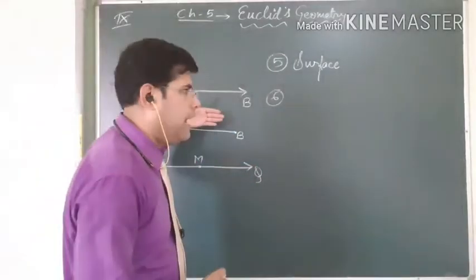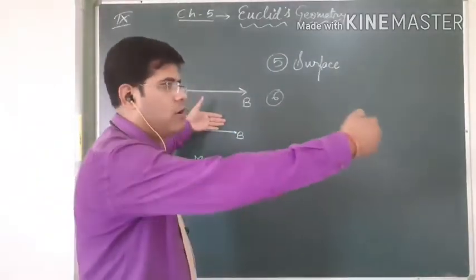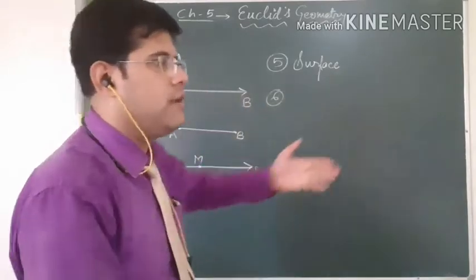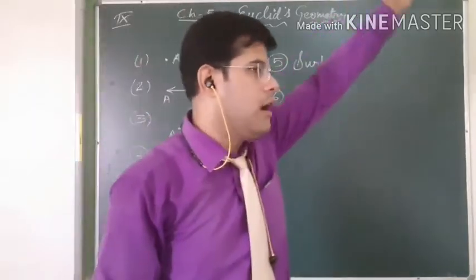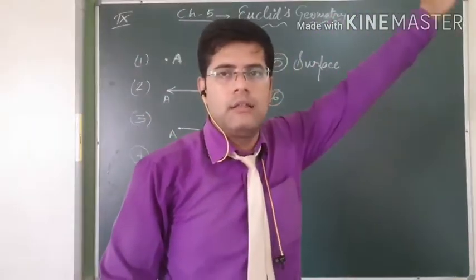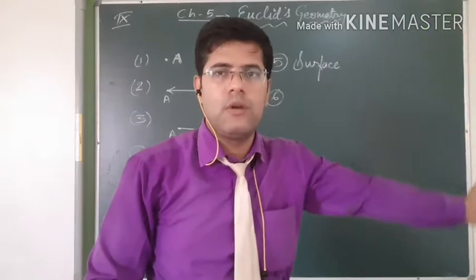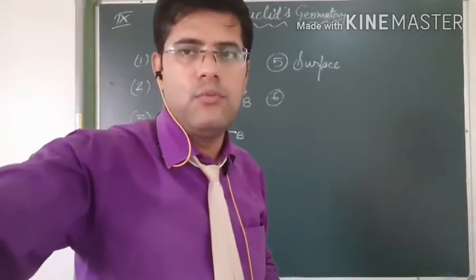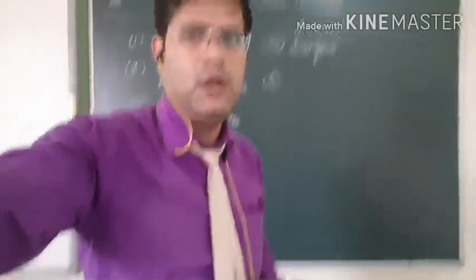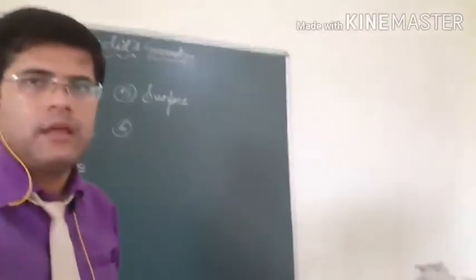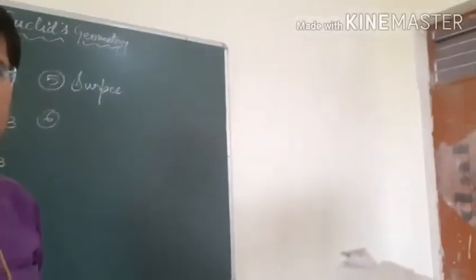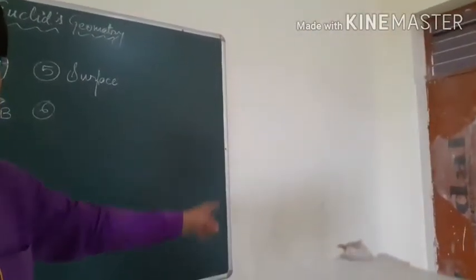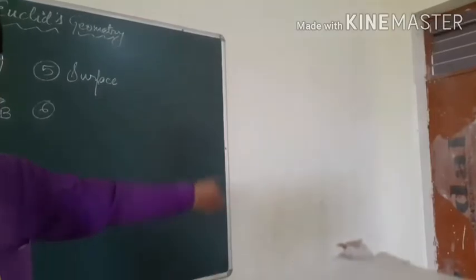This wall and the adjacent wall are both joined by a corner. That corner line is known as an edge. If you look at the place of the door, you can see the edge — this is called the edge.